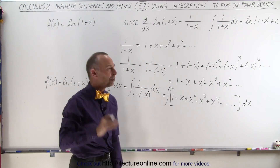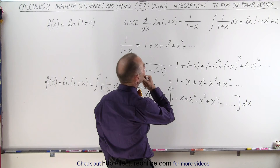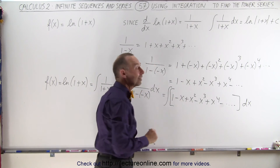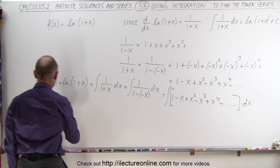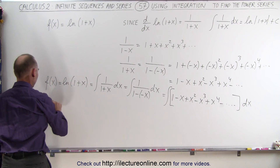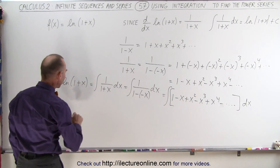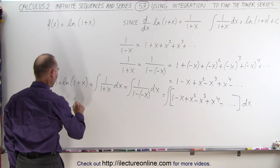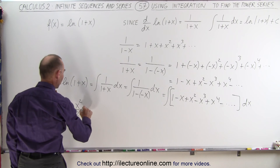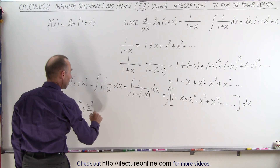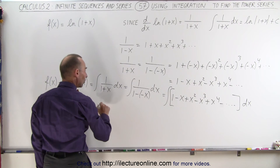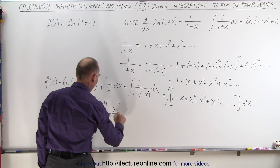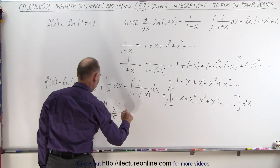Now you might ask about the constant of integration. That constant can be any value, and we're probably going to end up with a constant here anyway, so we can just ignore it for now. When we integrate term by term, f of x equals x minus x squared over 2 plus x cubed over 3 minus x to the fourth over 4 plus x to the fifth over 5 minus and so forth.